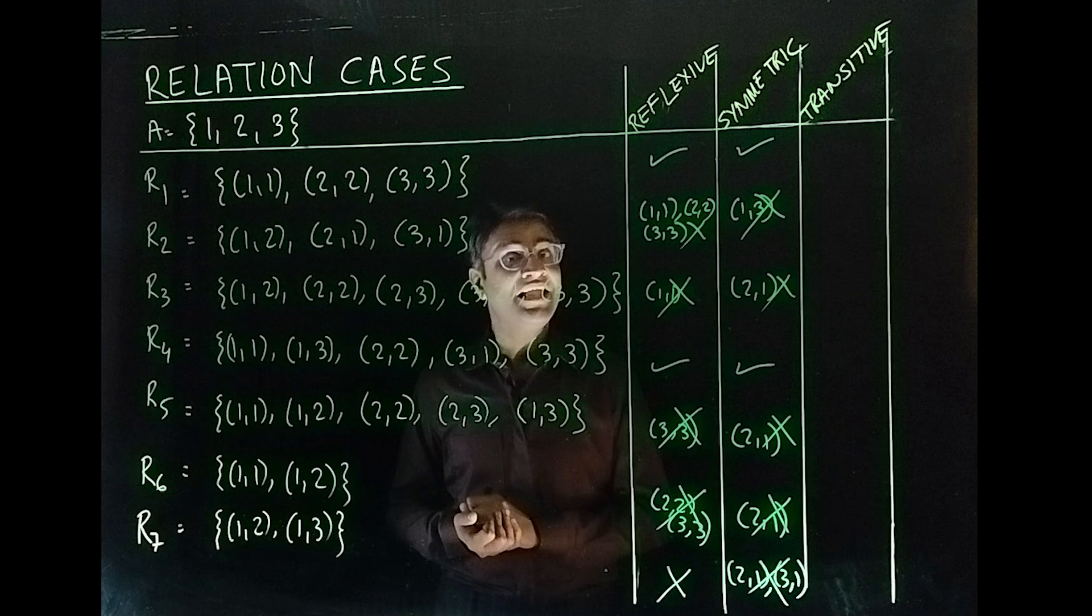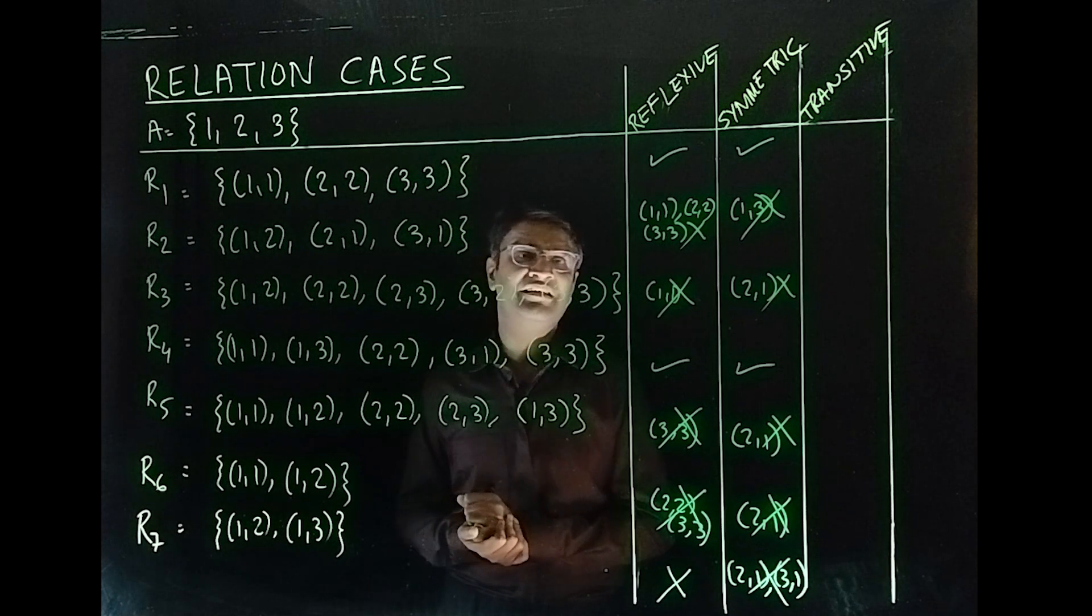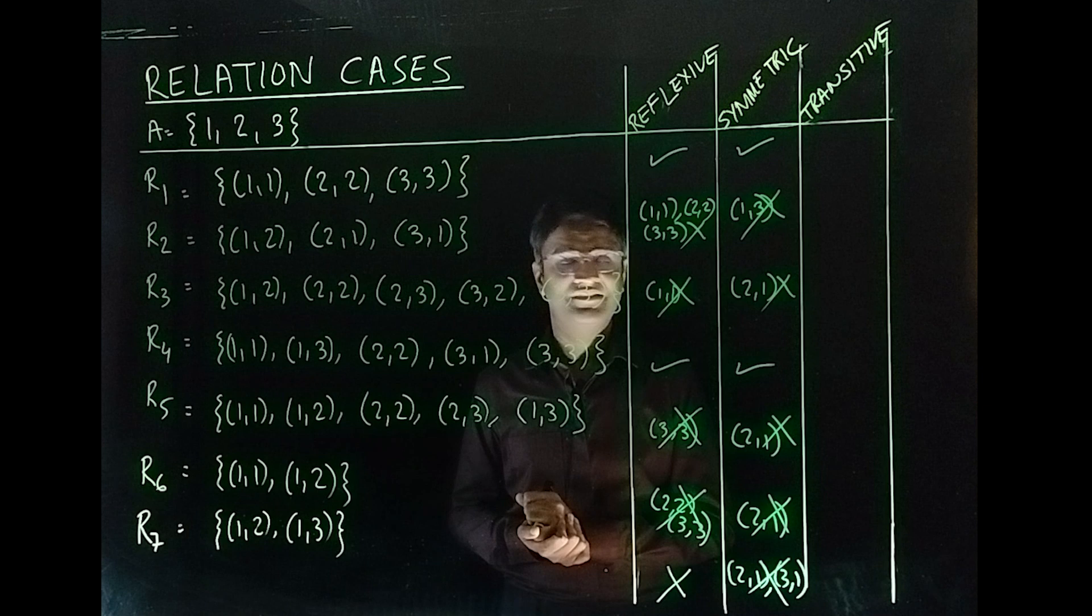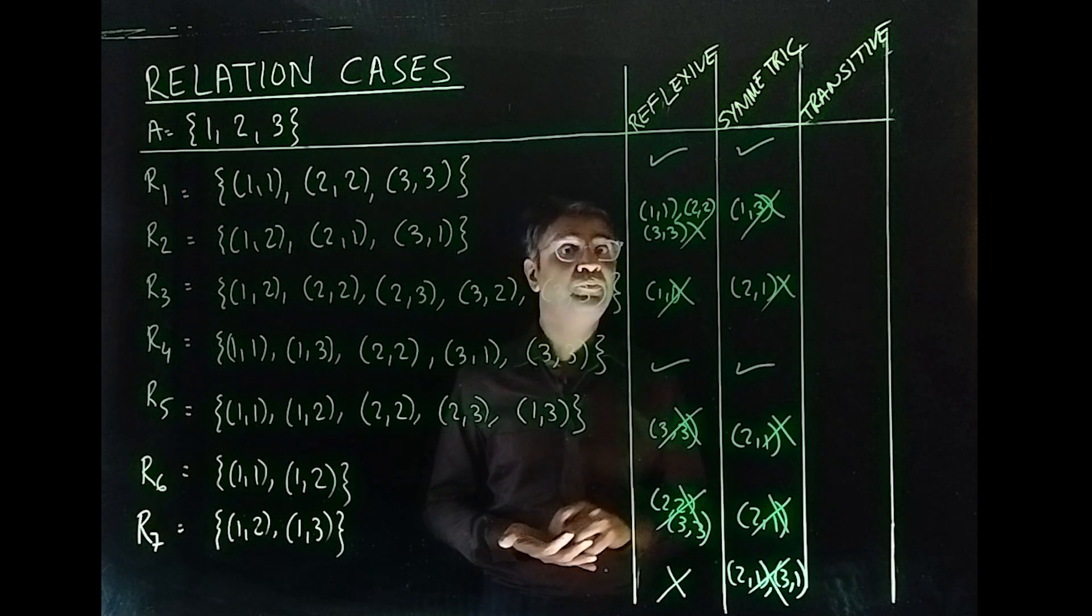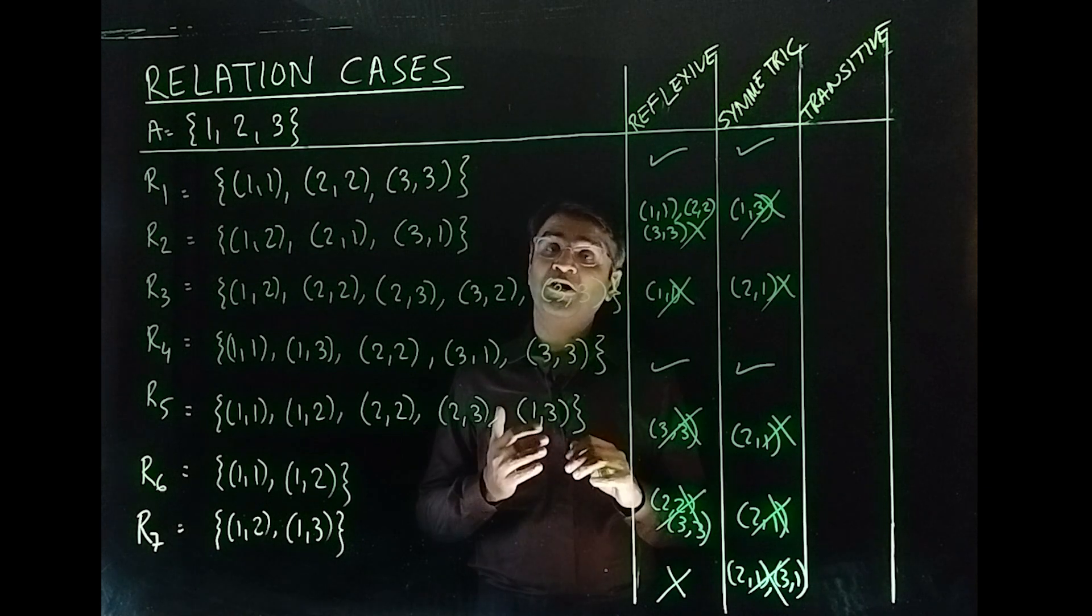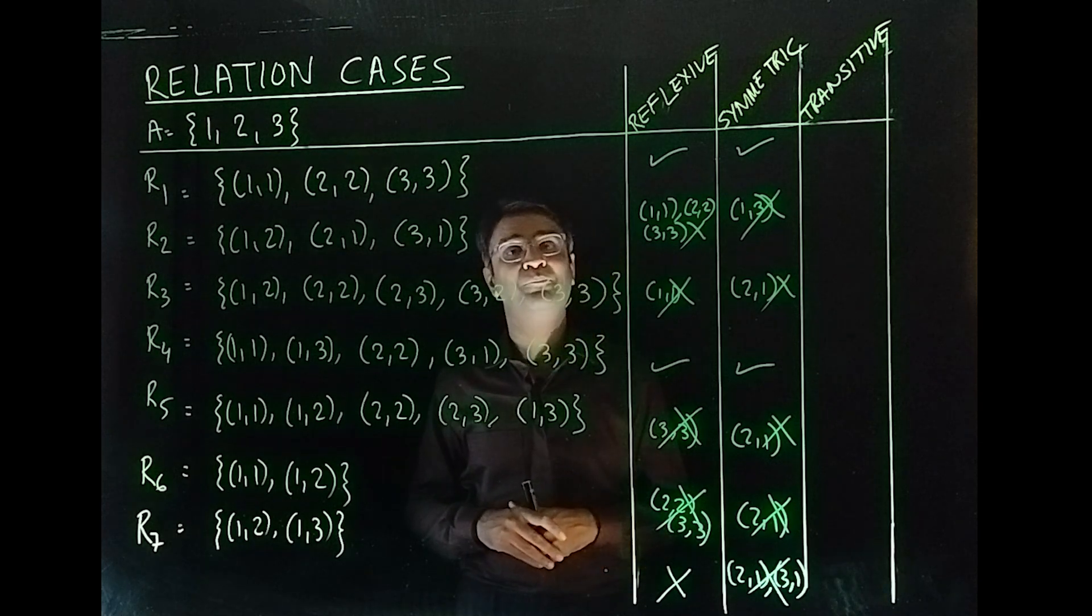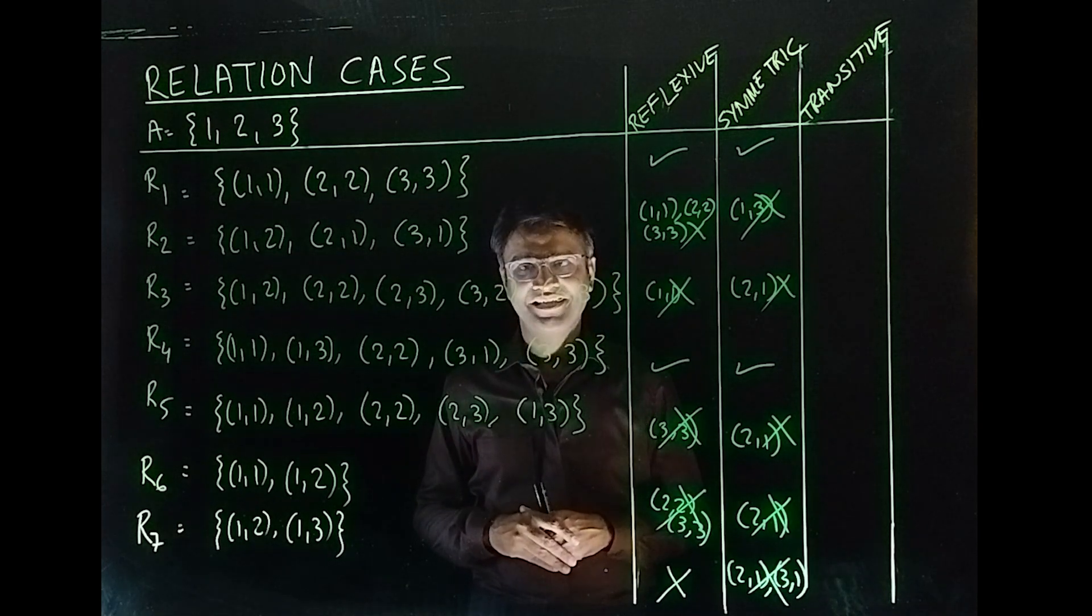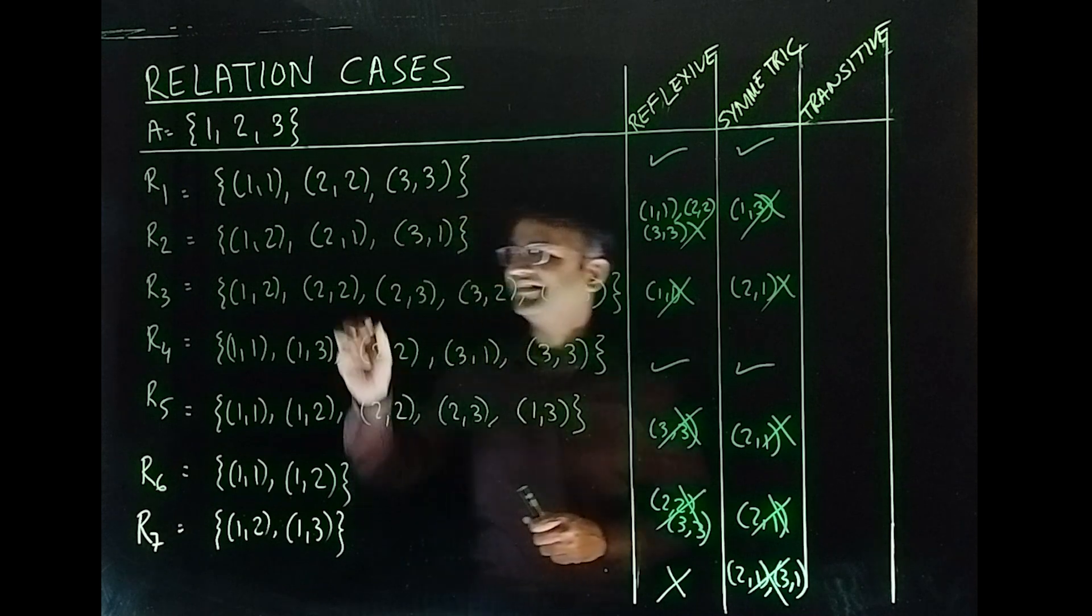Because the order of the third ordered pair is not first comma third, it is third comma first. Okay. Also, there is a very special case where you can claim transitivity. That is, if you have (A,B), but there is no (B,C). Yeah, that means you are failing to get the other two ordered pairs to complete transitivity. We will come across this situation here. Don't worry. Let's see.